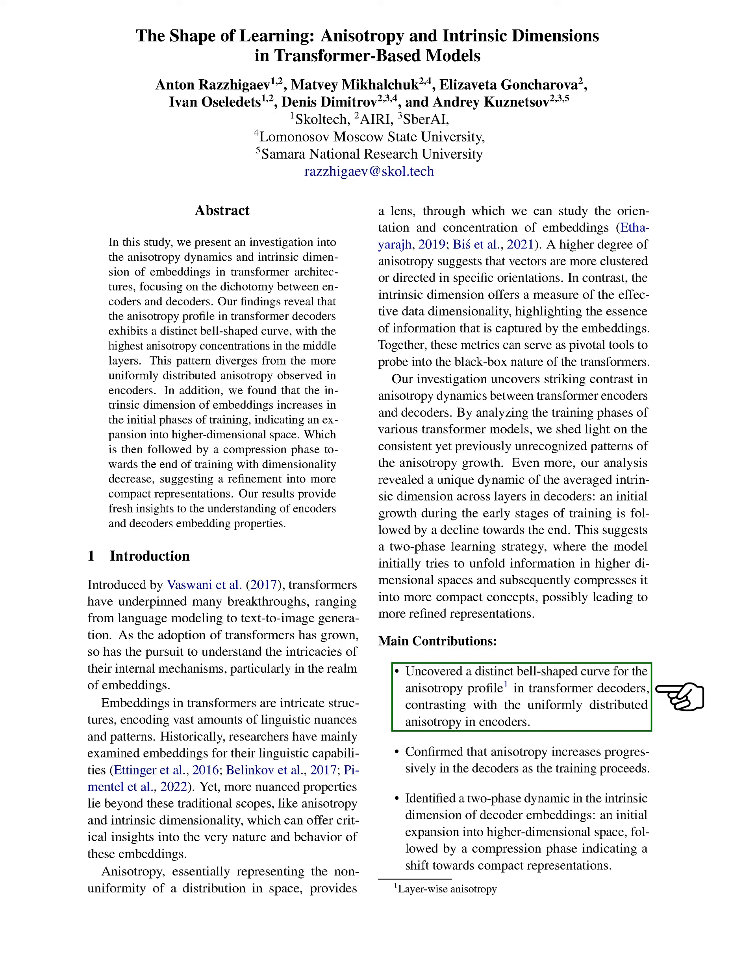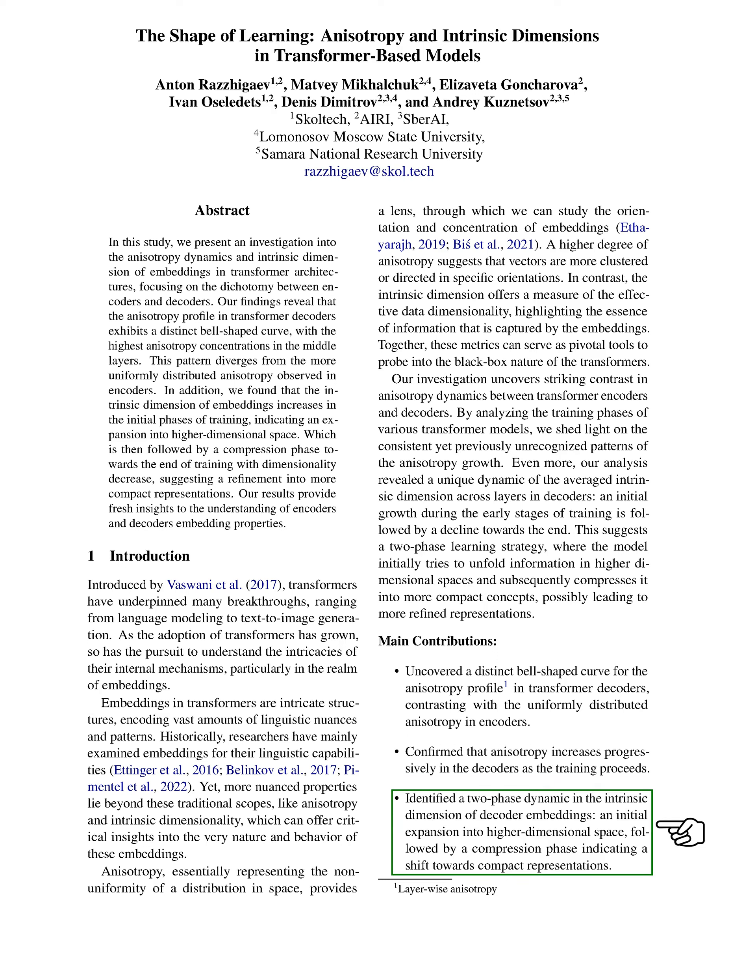Our main findings are: we discovered a unique bell-shaped curve for the anisotropy profile in transformer decoders, which is different from the uniformly distributed anisotropy in encoders. We confirmed that anisotropy increases progressively in the decoders as training proceeds. We identified a two-phase dynamic in the intrinsic dimension of decoder embeddings — an initial expansion into higher dimensional space, followed by a compression phase indicating a shift towards compact representations.